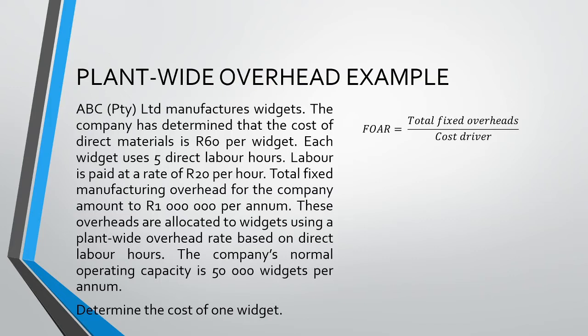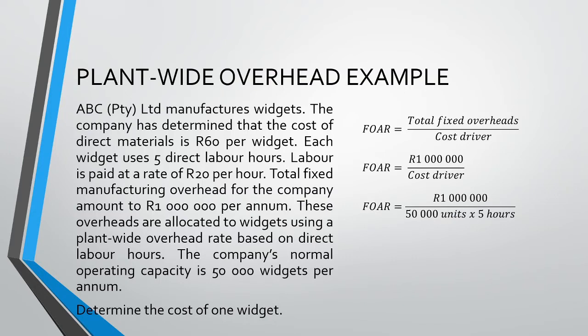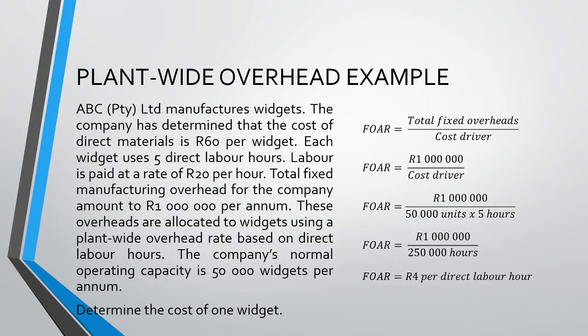In the scenario, we are told that the total fixed manufacturing overhead amounts to 1 million Rand. Reading the scenario, we see that the overheads are allocated based on direct labor hours. We can't just divide the 1 million Rand by 5 hours, because that is the hours of only one widget. Rather, we need to use the total estimated hours for the period. To get this, we multiply the 5 direct labor hours per widget by the capacity for the year — 50,000 widgets — giving us a total cost driver of 250,000 hours. We can now divide the 1 million Rand by 250,000 hours to arrive at our fixed overhead absorption rate of 4 Rand per direct labor hour.